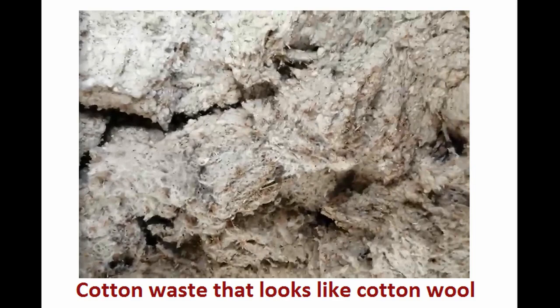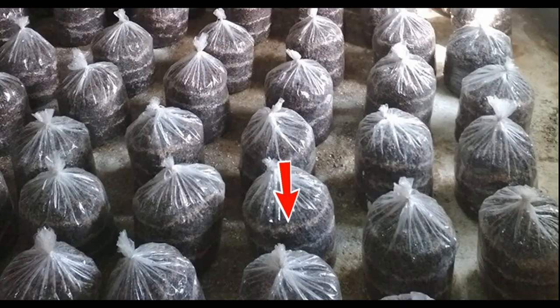Therefore, oyster mushroom mycelium is applied in layers and only near the film. The mycelium first grows on the surface of the substrate. When the temperature in the center of the block drops, the mycelium begins to capture the entire thickness of the substrate.